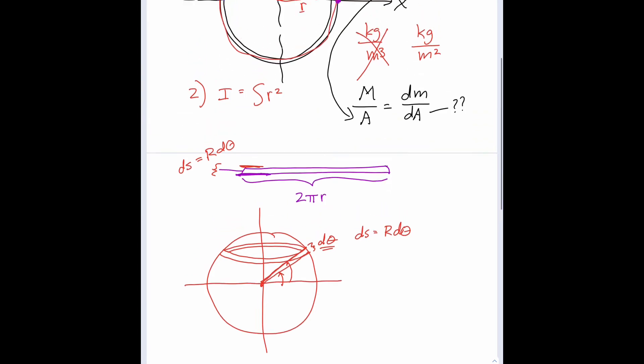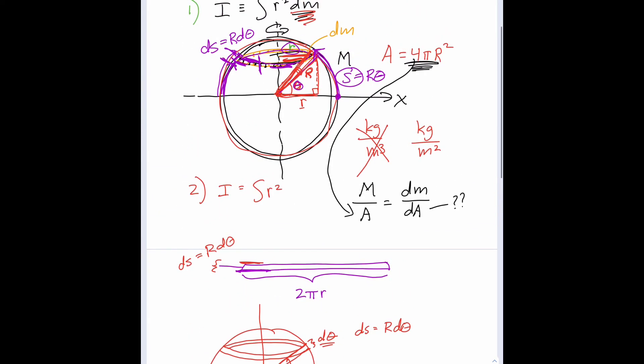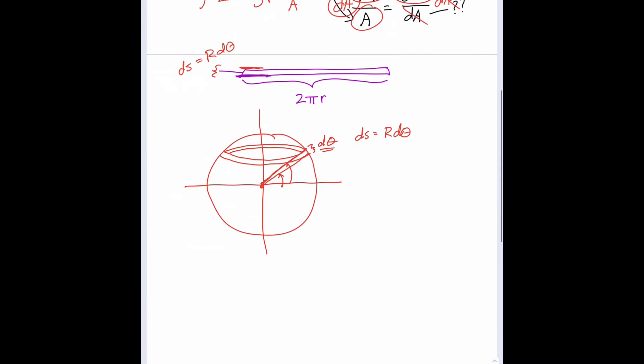So instead of dm, we'll replace it with capital M over A times dA. Right, dm is capital M over A times dA.